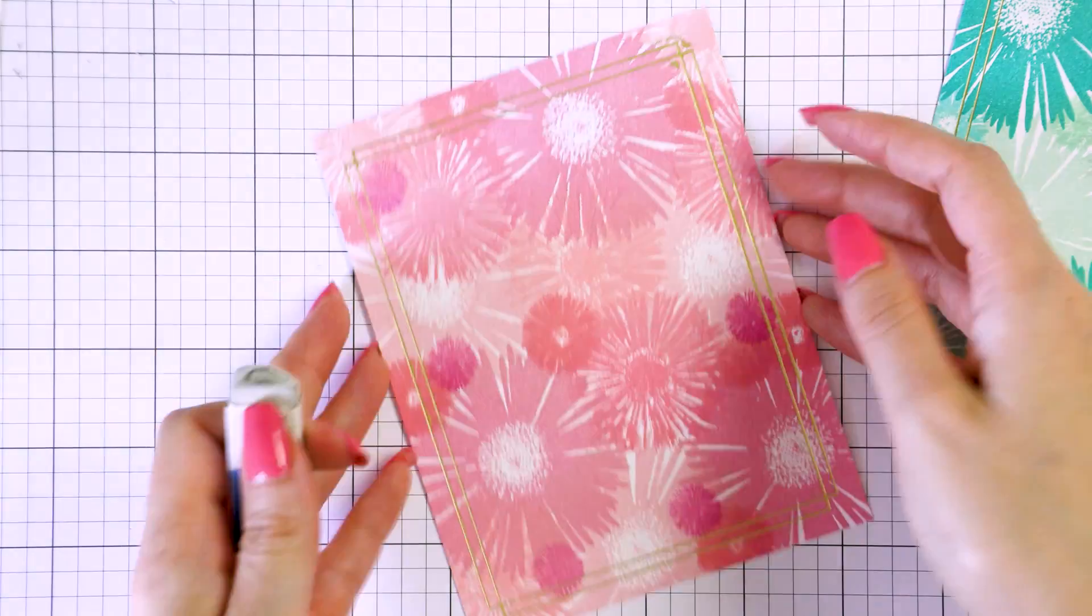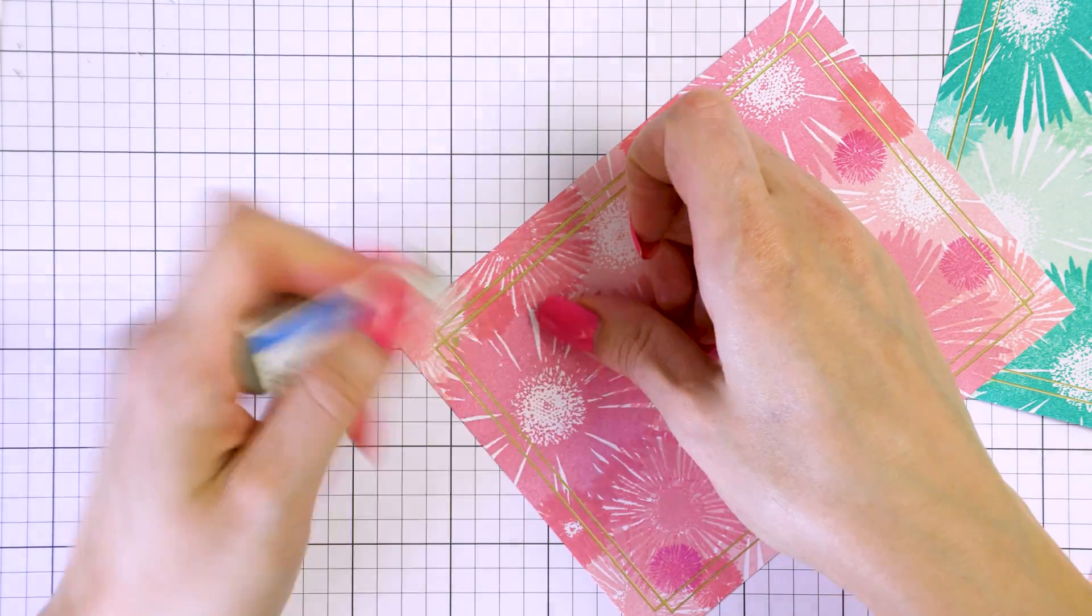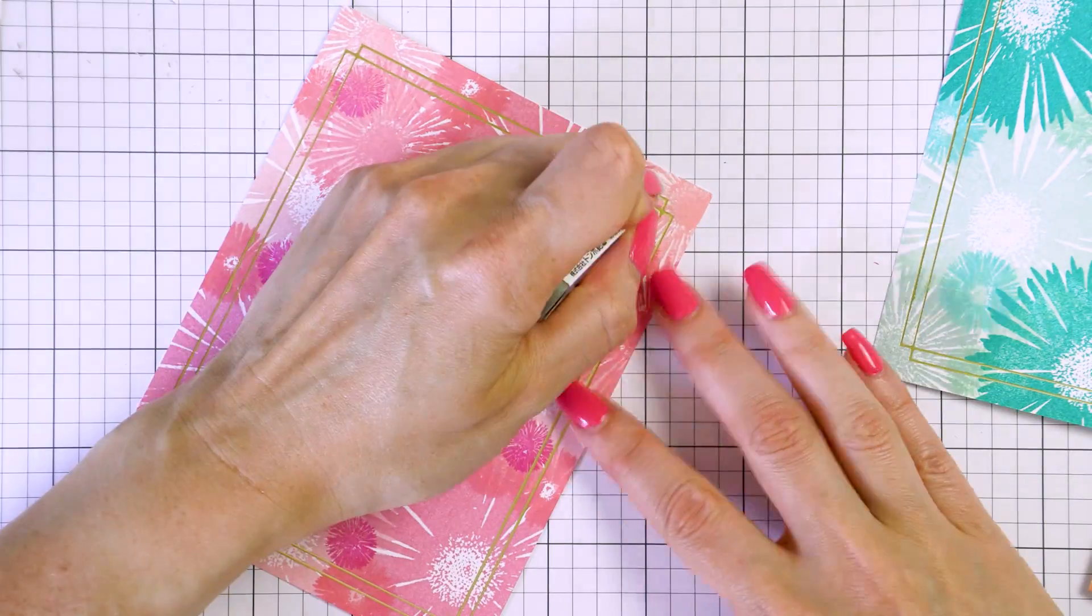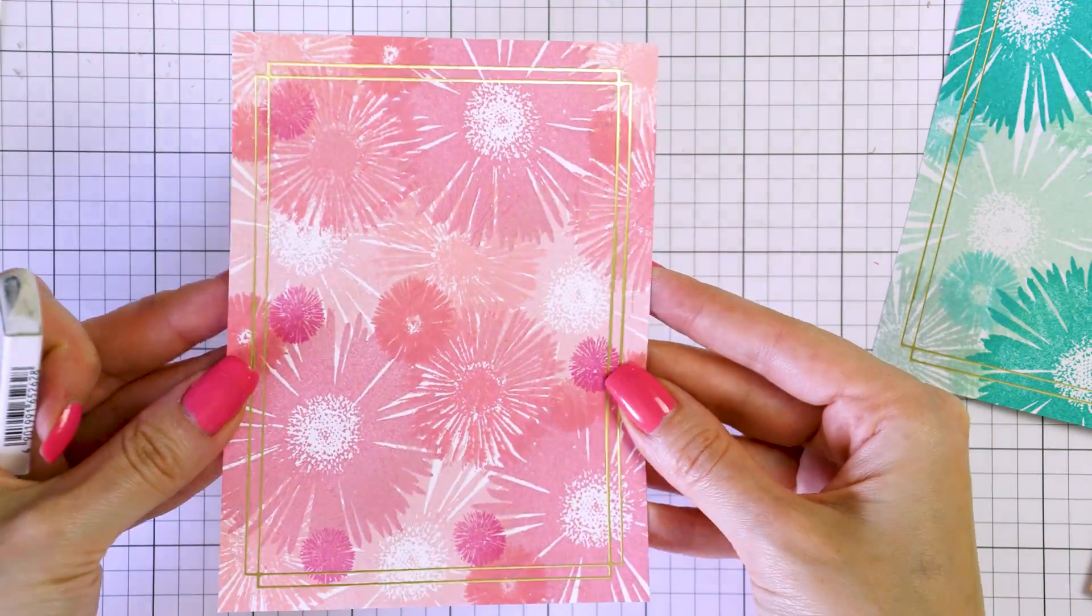If you have overfoiling and that is normal, just use a pencil eraser and erase it. I have a bit of overfoiling on all of my frames and I can easily take care of that with my Tombow Mono sanding eraser.